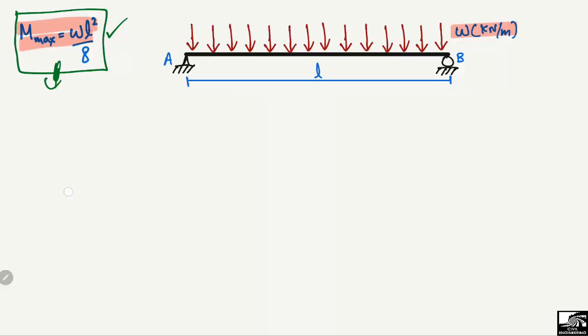This maximum moment is at the mid-span of the beam because there is a uniformly distributed load, so of course the maximum bending moment will be at the mid-span, as the support reactions are at the extreme ends. So how do we prove this equation? We first need to find out the support reactions.